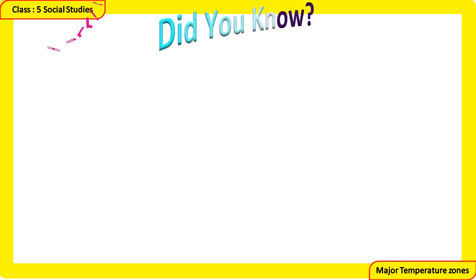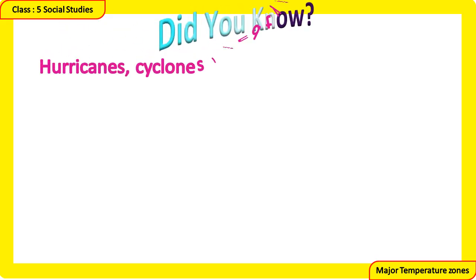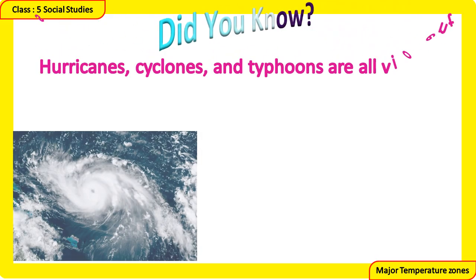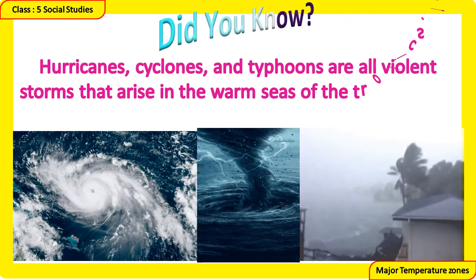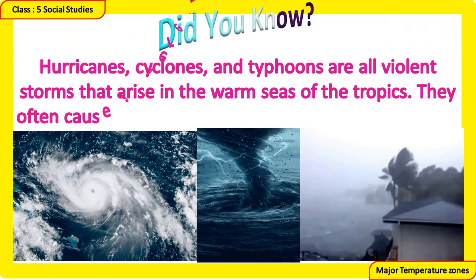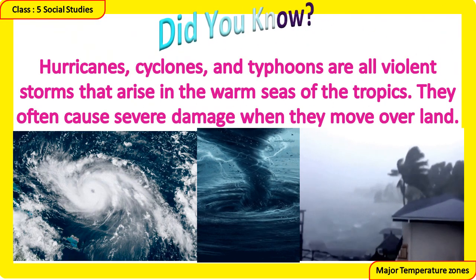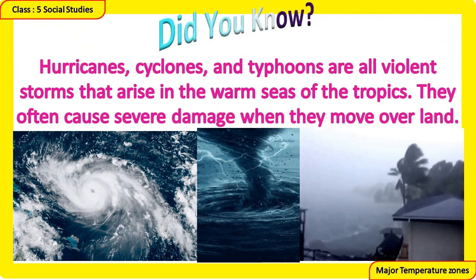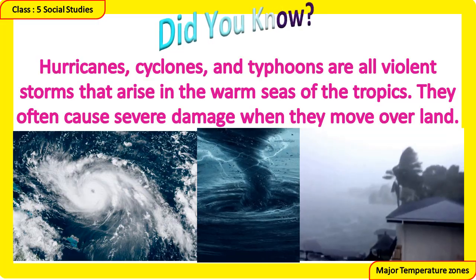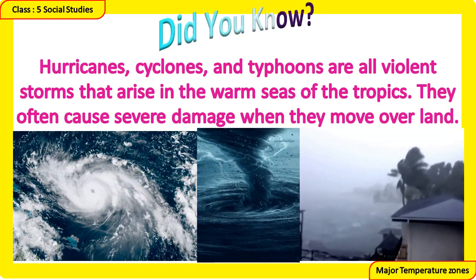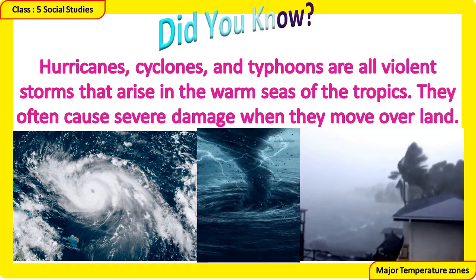Did you know? Hurricanes, cyclones, and typhoons are all violent storms that arise in the warm seas of the tropics. They often cause severe damage when they move over land.